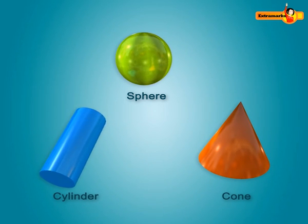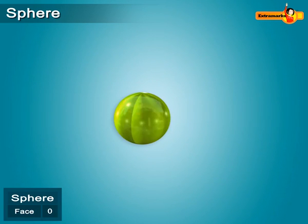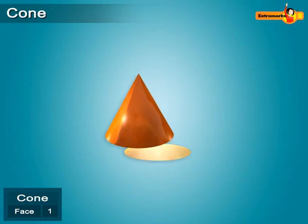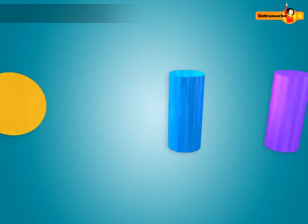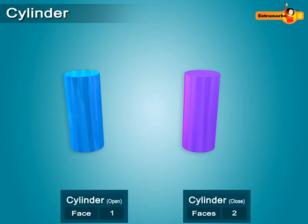What about their faces? Well, sphere does not have any face. A cone has 1 circular face, and a cylinder can have 1 or 2 faces. If it is open from one end, it will have 1 face.